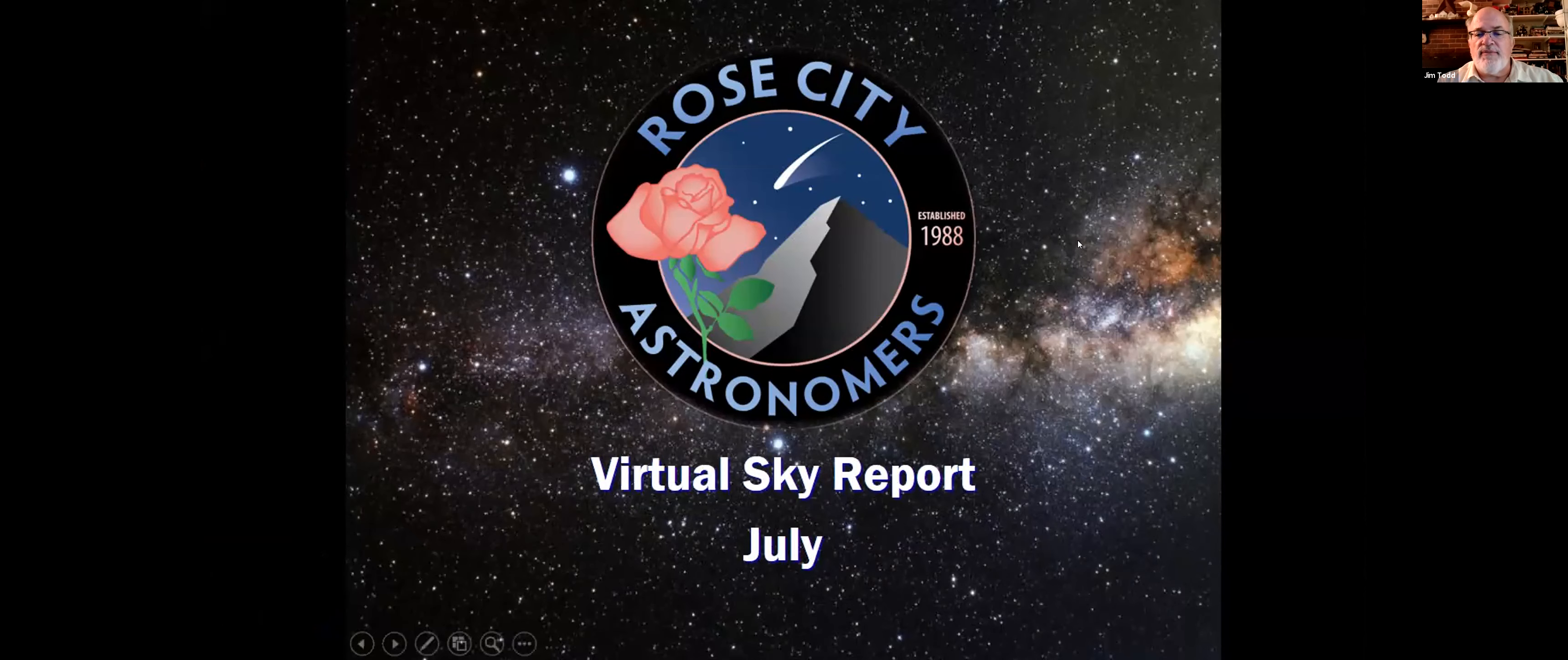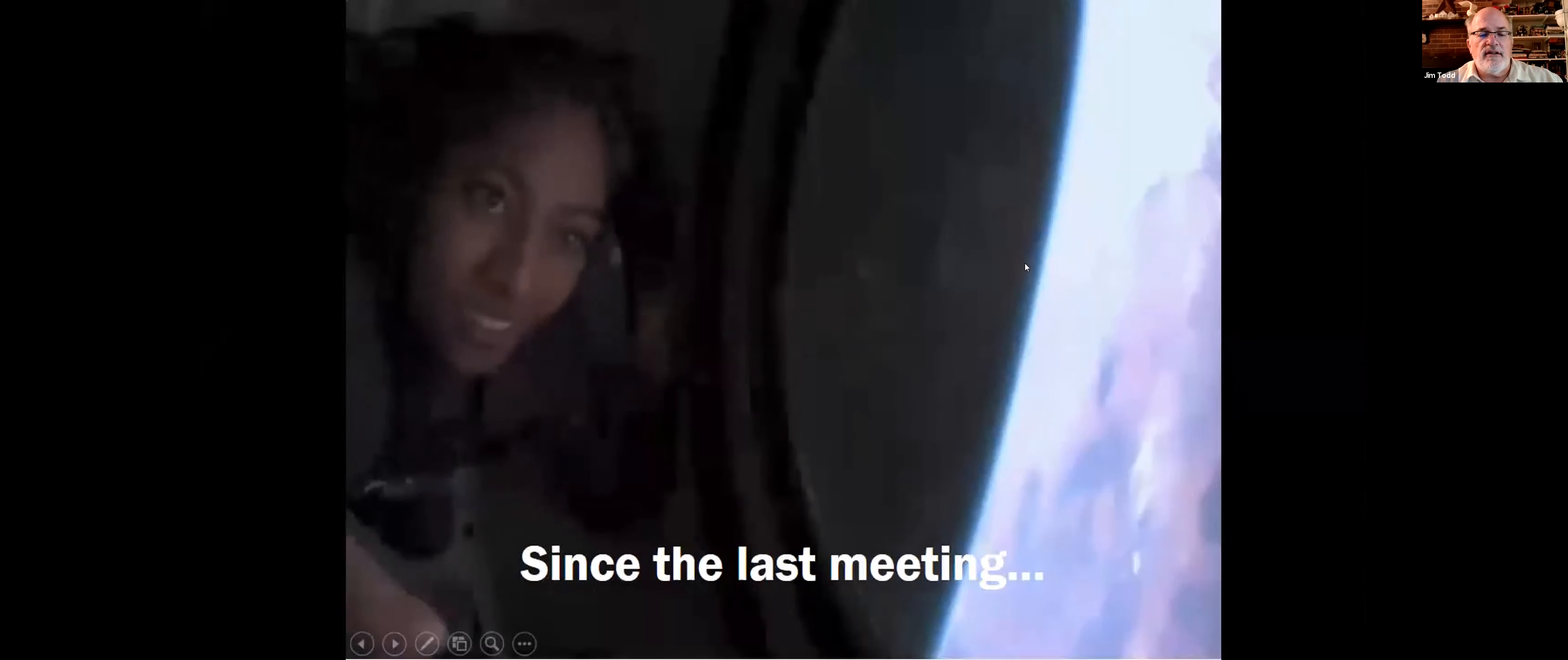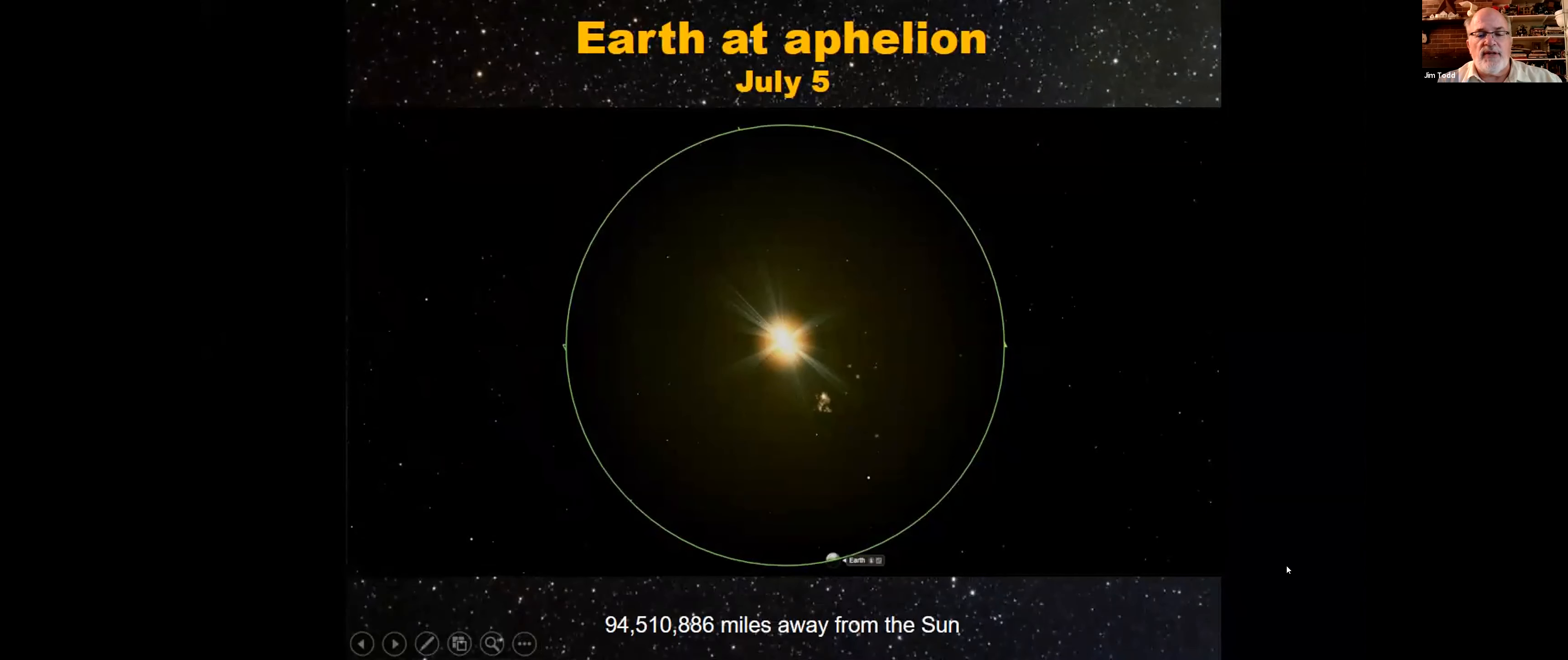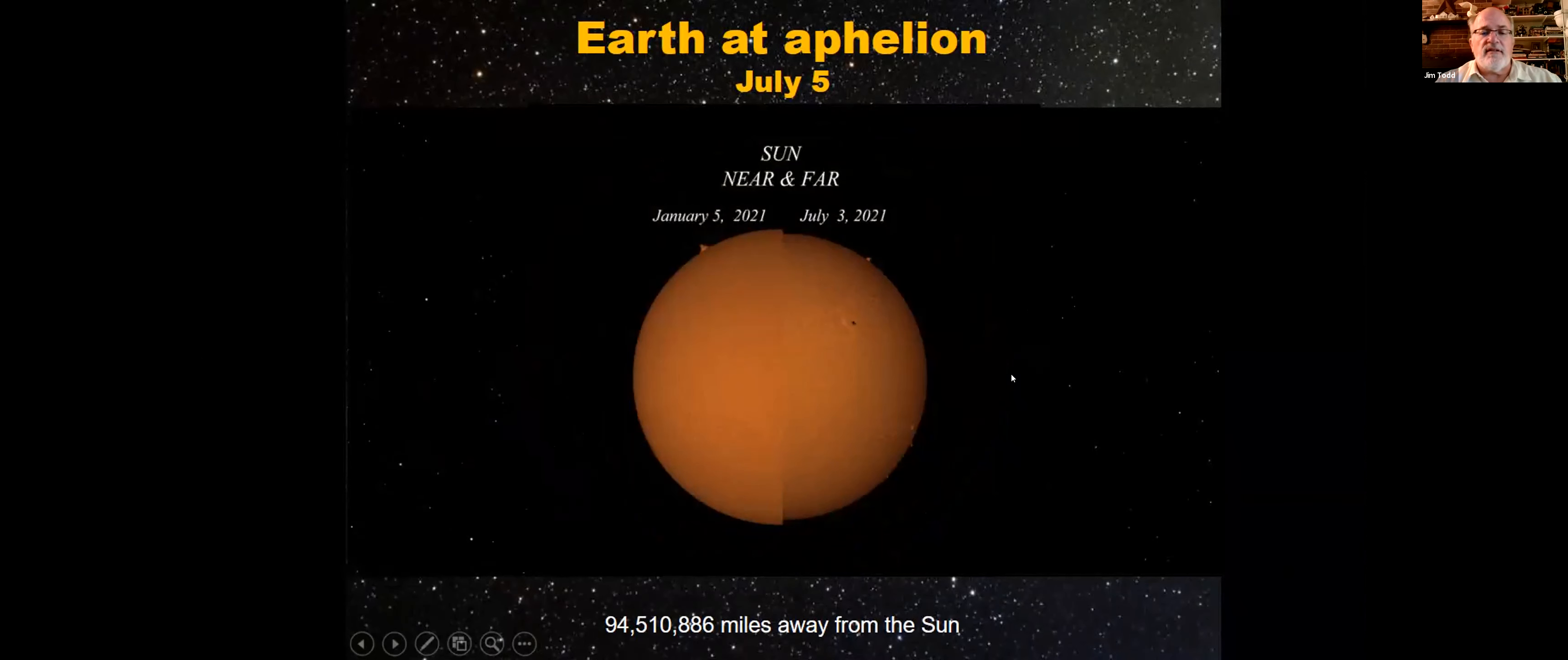Welcome everybody to virtual sky report for July. Lots happening, a lot has happened in the past month. Since the last time we had a meeting, I'll talk about some of the things that happened last July. We were at aphelion. There was a nice little photograph that came out on astronomy picture of the day where you could see the difference between perihelion and aphelion.